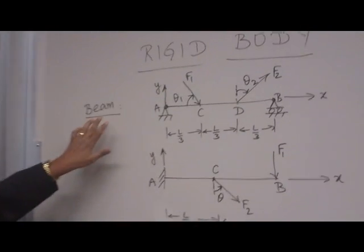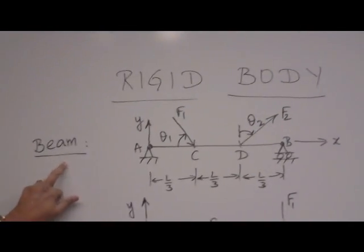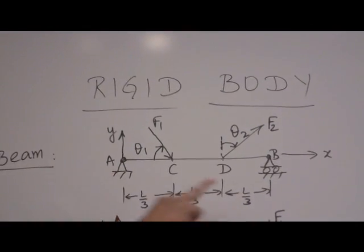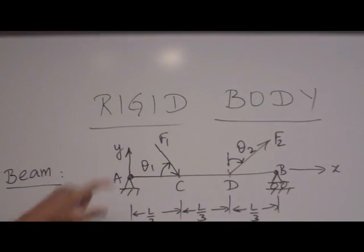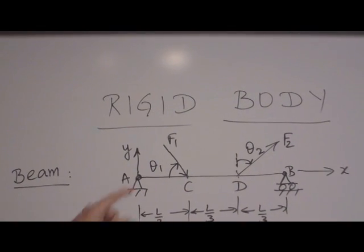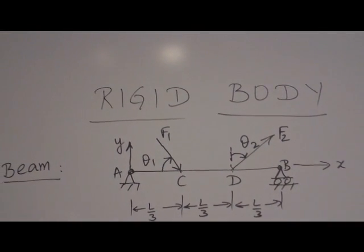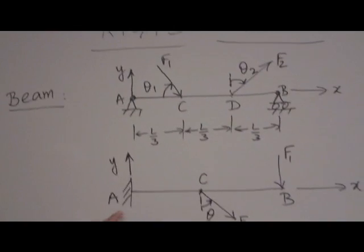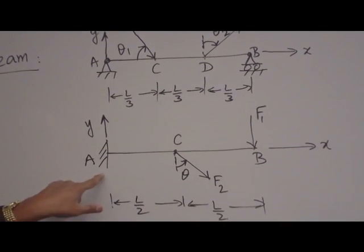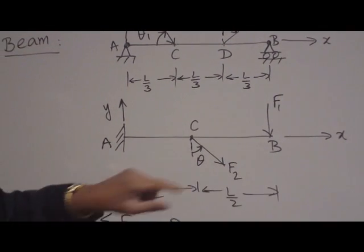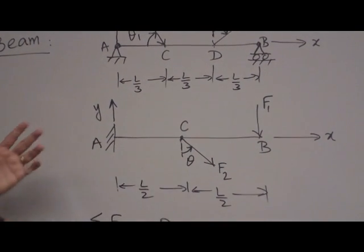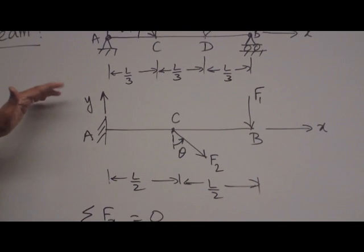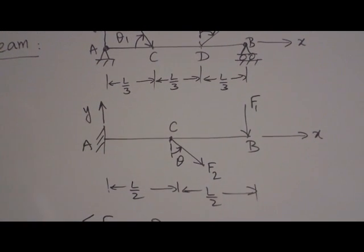The rigid body, I took a beam as an example. We have simply supported beam. One end is hinged, other end have roller support. You have force F1 and F2 acting at angles theta 1, theta 2. And another example is a cantilever beam. One end is fixed, other end is free. Again you have force F1 and F2 acting. Now these forces try to bend the body with respect to the support.